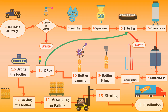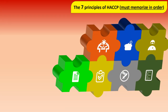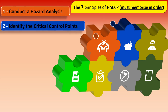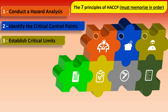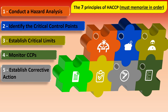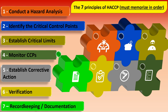Later on, we will explain the seven principles of HACCP, which must be memorized in this order: 1) conduct a hazard analysis for each step; 2) identify the Critical Control Points (CCPs); 3) establish critical limits; 4) monitor the CCPs; 5) establish corrective actions; 6) verification; 7) record keeping or documentation.